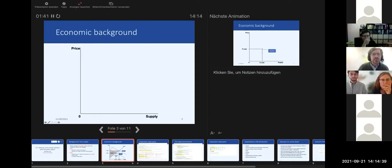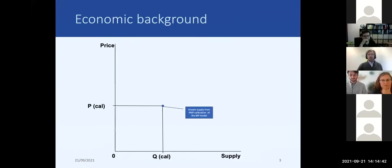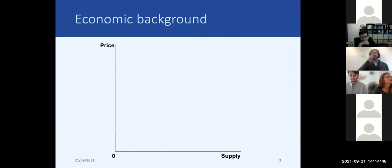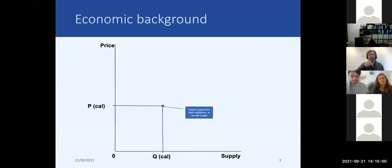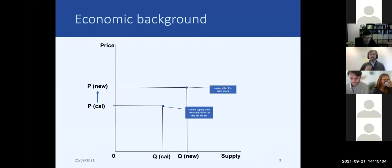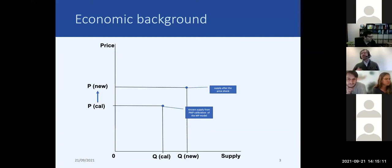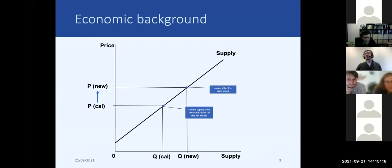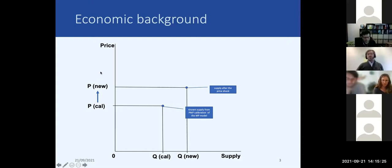Prices are now exogenous because Denmark is a price-taker in this mathematical programming model calibrated with PMP. What we can do is take the calibration price, shock this price, and get a new production. If we increase the price, economic theory tells us that production should also increase. This represents the unknown supply function of the country - we are only optimizing at certain points, but by testing different prices we could approximate this supply function.